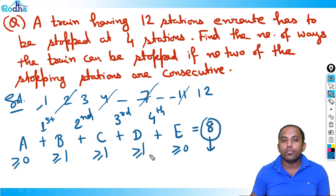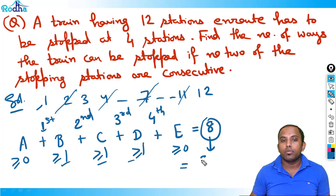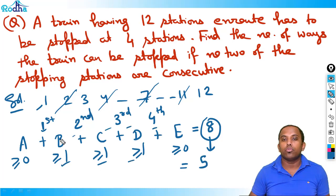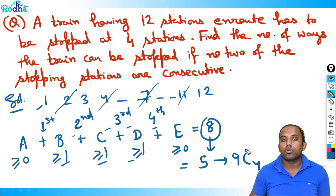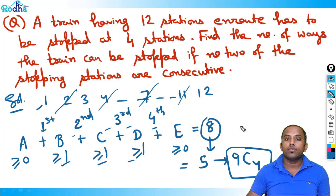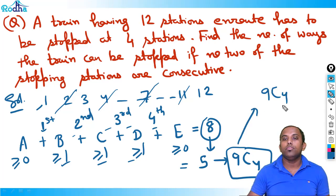Out of 12 stations I've already picked 4, leaving 8. Three middle variables each get 1: 3×1 = 3, so 8 − 3 = 5 remaining. With 5 variables there are 4 plus signs, so the answer is 5 + 4 = 9C4, which equals 126.